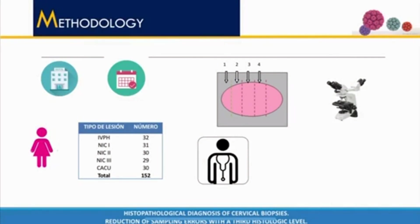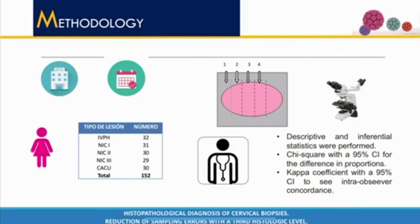For statistical testing, descriptive and inferential statistics were used: G-squared with an 85% confidence interval for the difference in proportions, and kappa coefficient with an 85% confidence interval to assess inter-observer concordance.